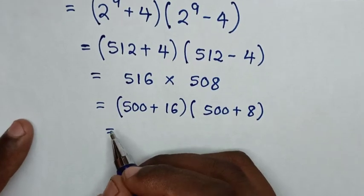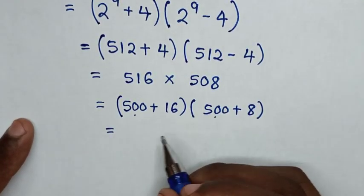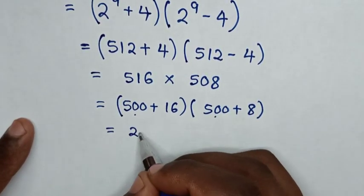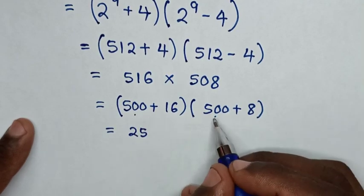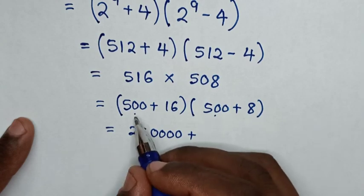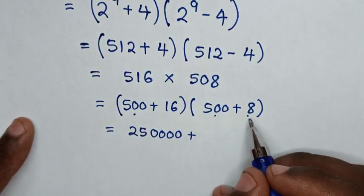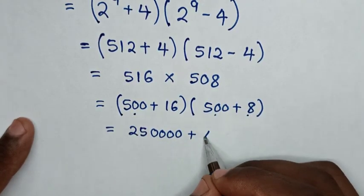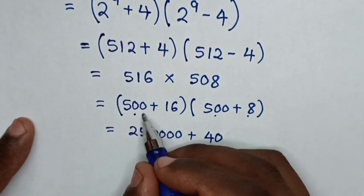Expanding this: 500 times 500 is 25 with four zeros, which is 250,000. Then 8 times 500 is 40 with two zeros, which is 4,000.